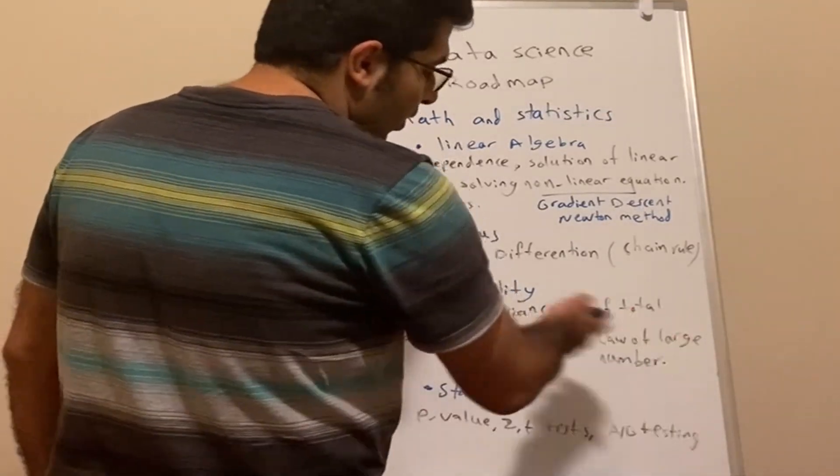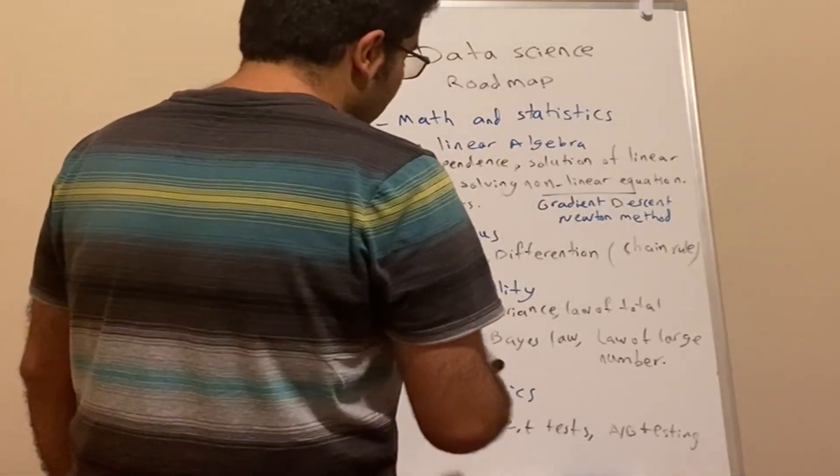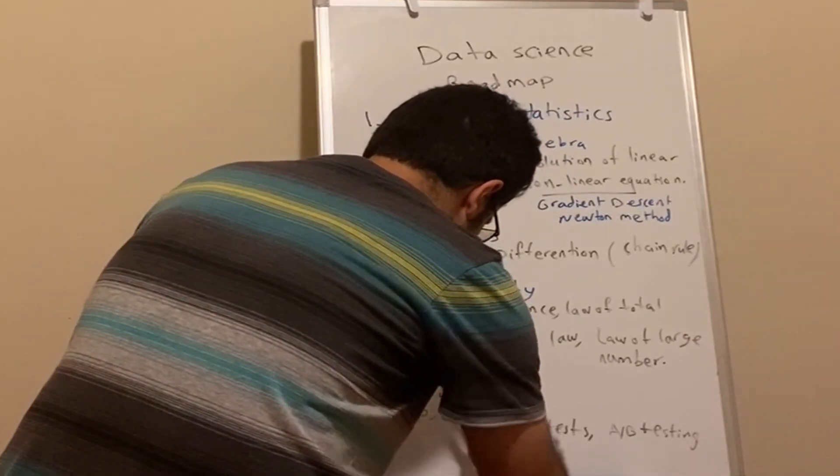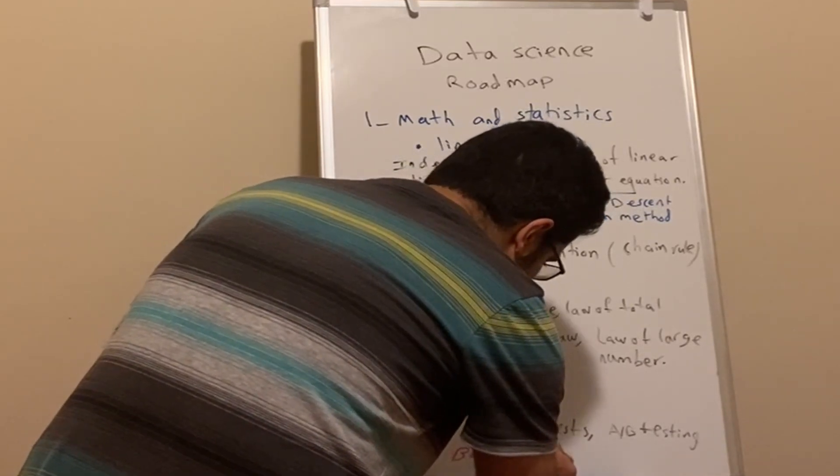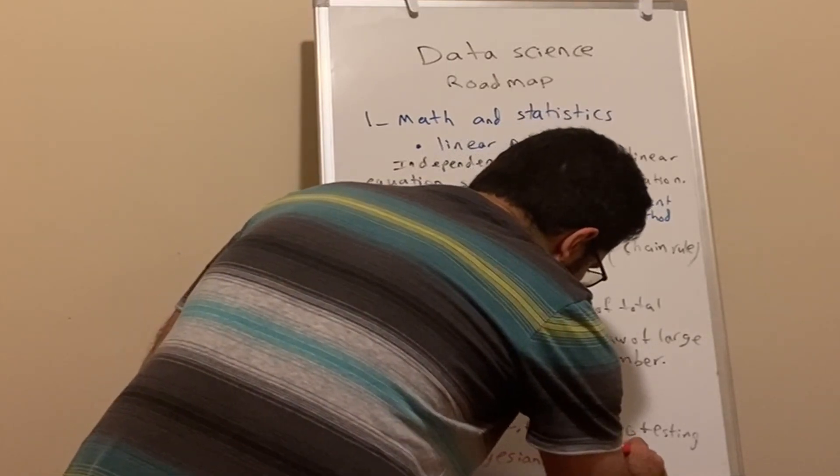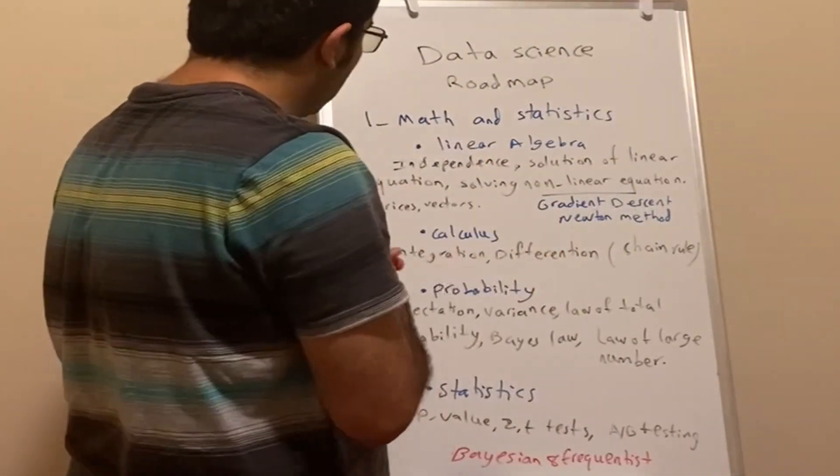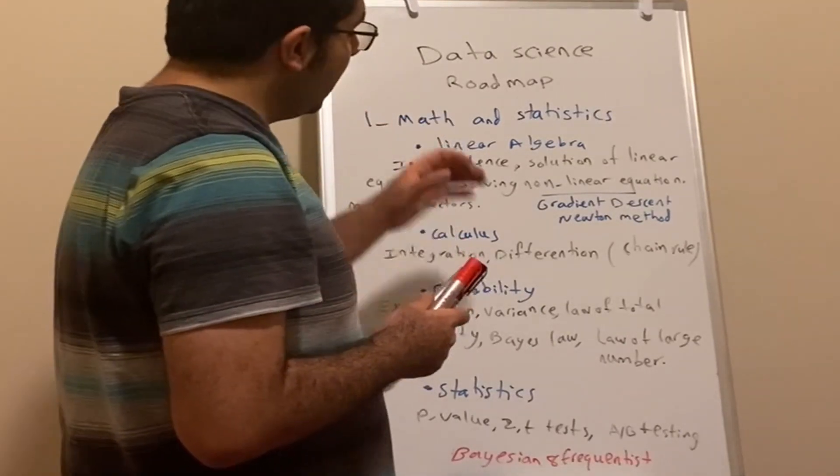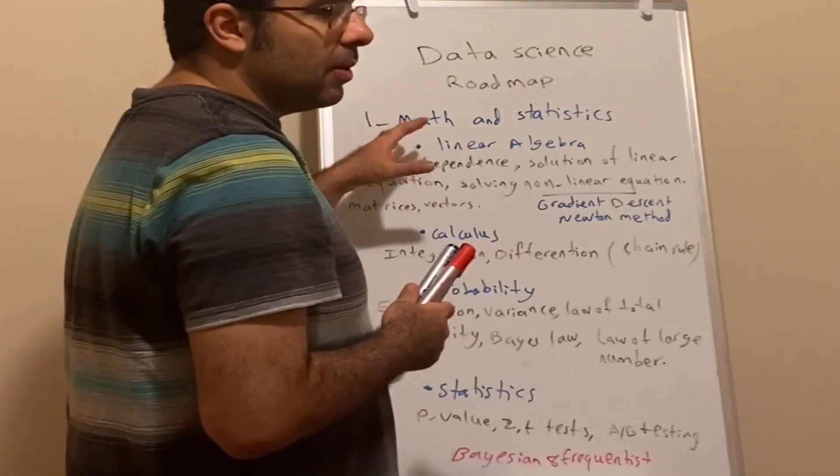We also need to have a good understanding of Bayesian and Frequentist statistics. I have a video about most of these concepts, but if any concept is not familiar, let me know and I can make more videos. This is the basis of math and statistics we need for data science. Once we understand these concepts, we're going to be good to begin a data science career. This is number one.